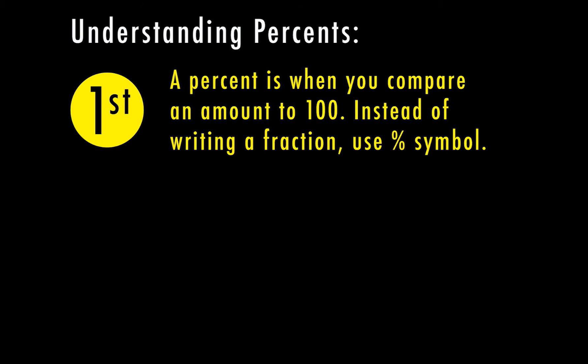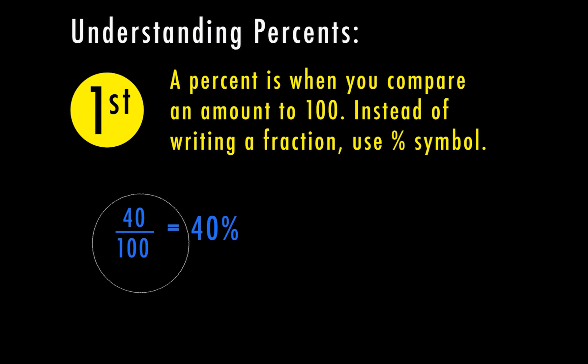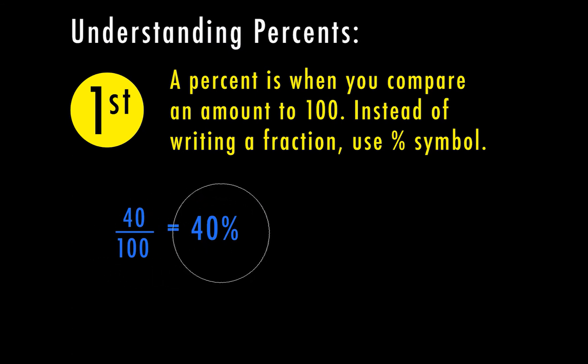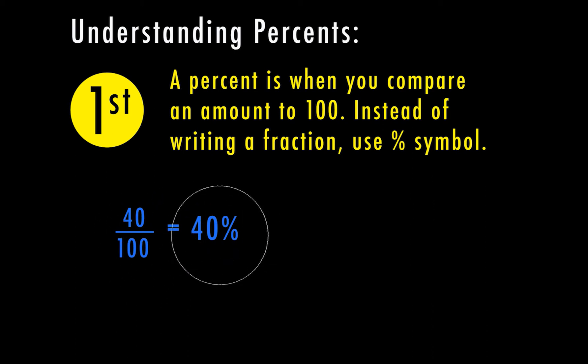Let's talk about the first step in understanding percents. A percent is when you compare an amount to 100, and instead of writing it as a fraction, we're going to use the percent symbol. So for example, 40 over 100 is equal to 40 percent — anytime we take that 100 denominator out of the equation, we change it to a percent sign.